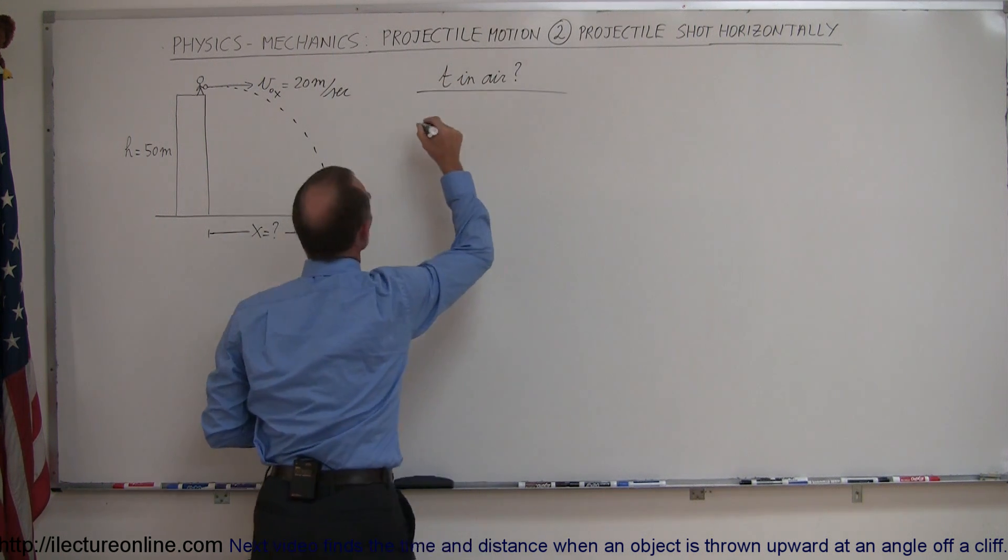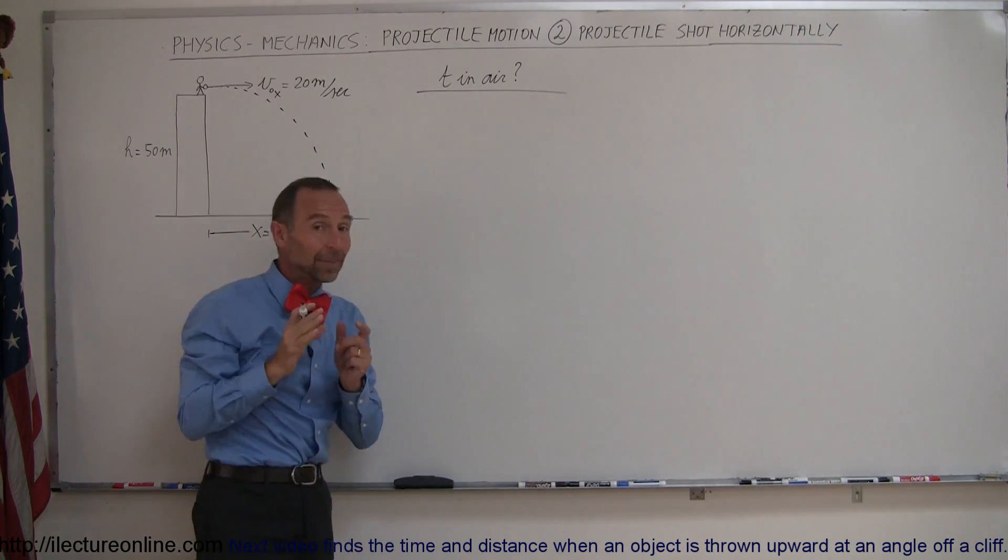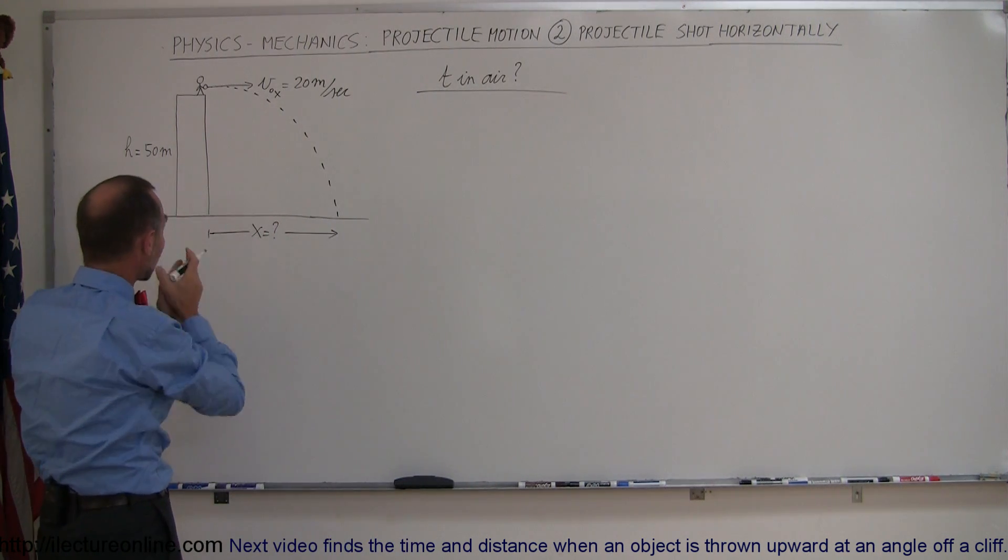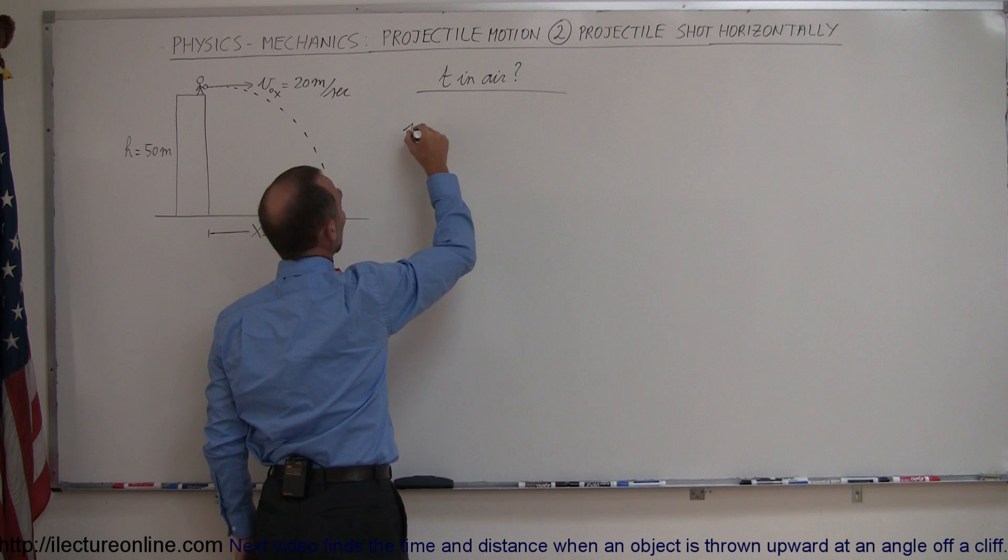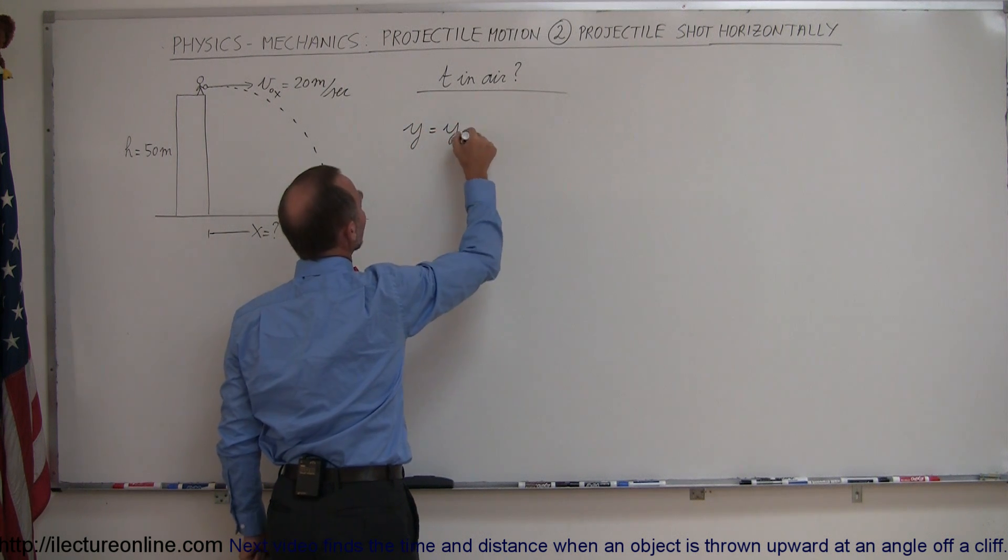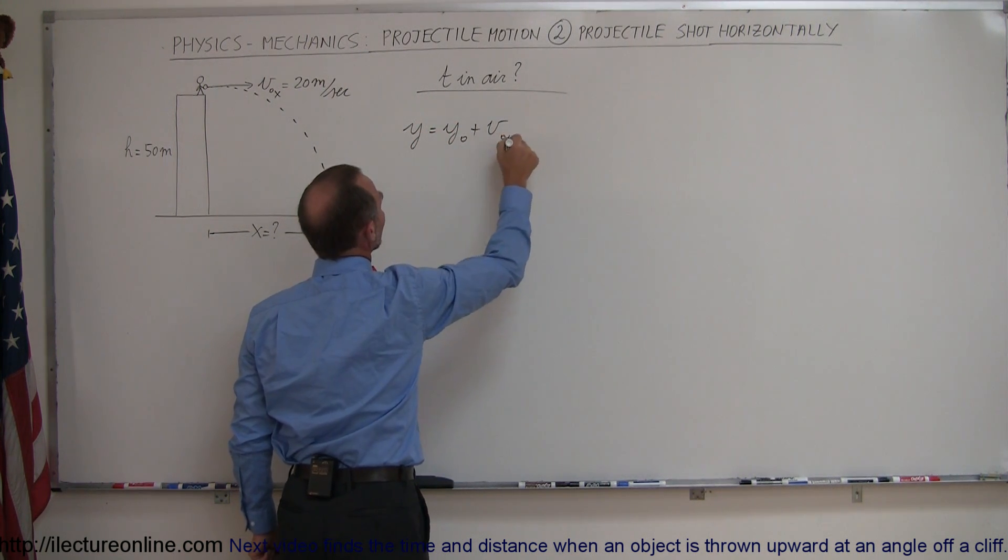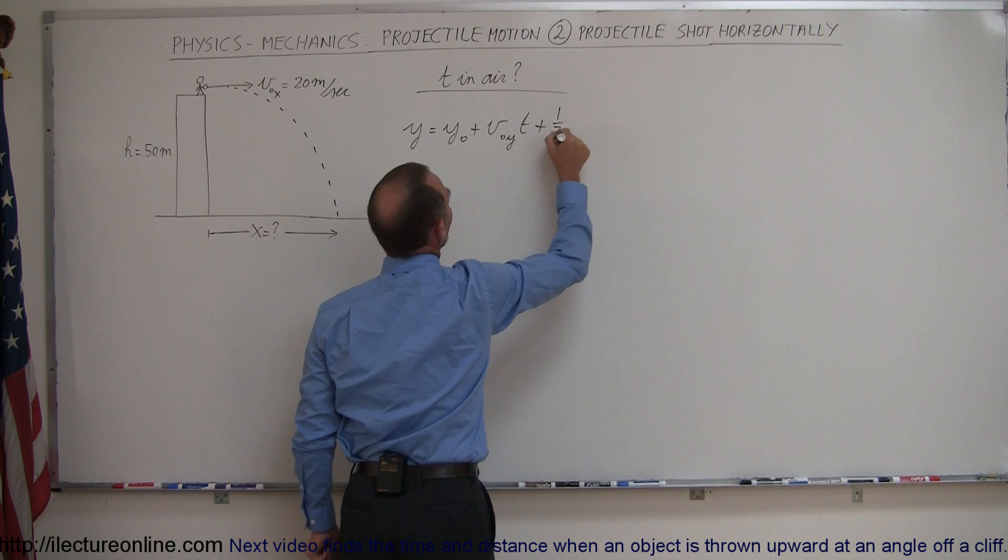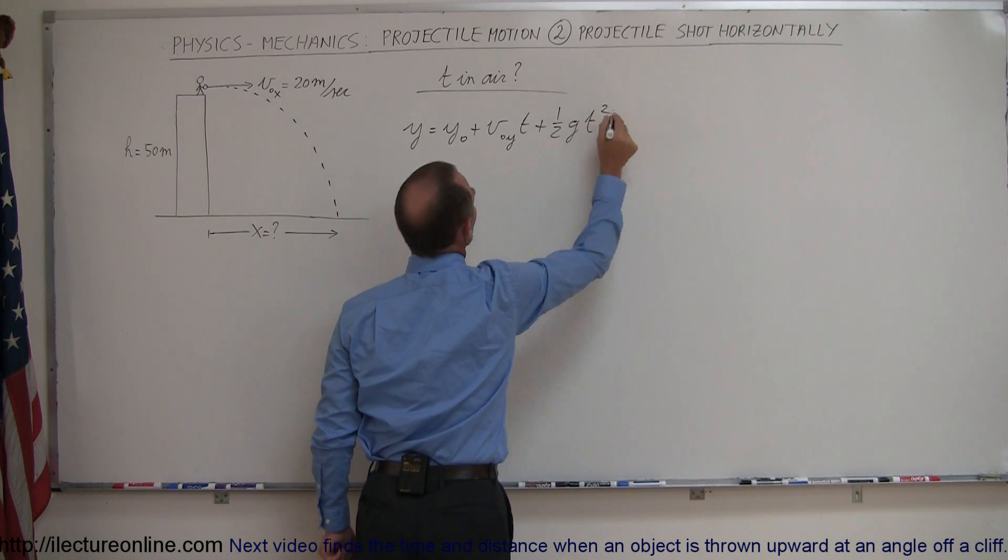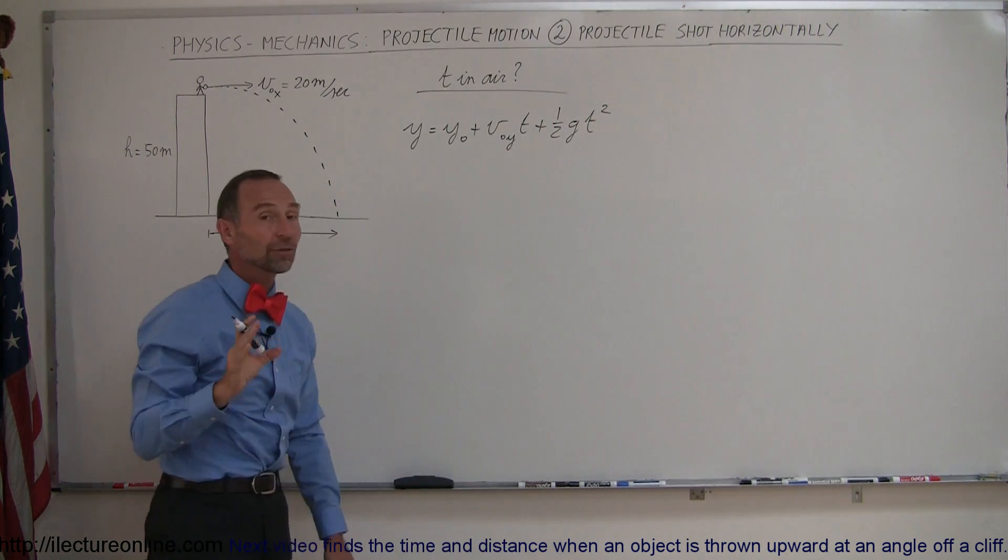And you do that by using this equation. Remember that the time in the air typically depends only on the vertical motion. So we use the equation y equals y sub-naught plus v sub-naught in the y direction times time plus one-half g t squared. This equation should allow us to find time.